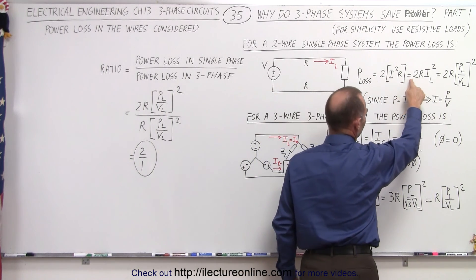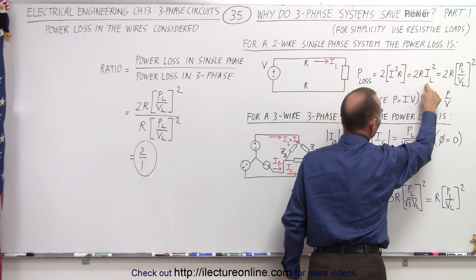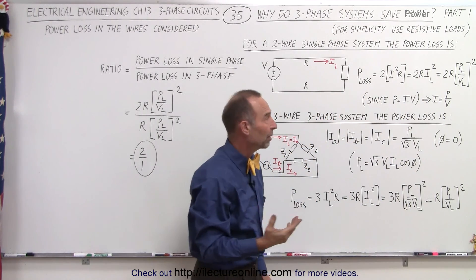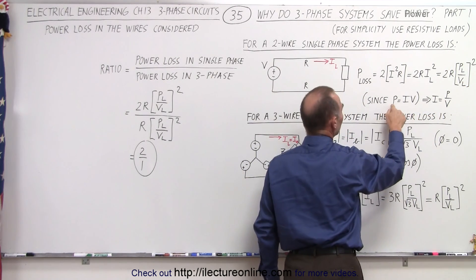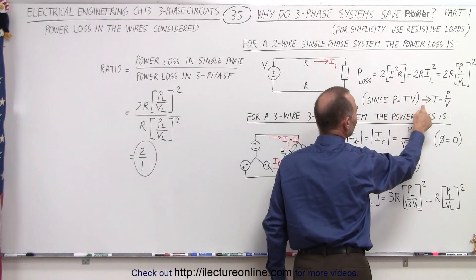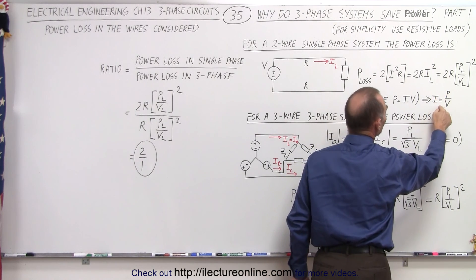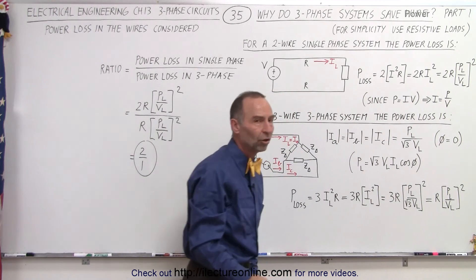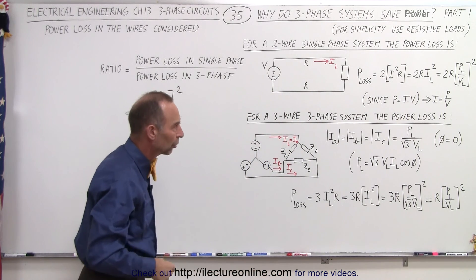Rearranging the terms, we have 2R times I of the line, the line current squared. And of course, the line current can be expressed in terms of the power and the voltage. Notice that the power is I times V, therefore, I is P over V. So instead of writing I, we could write P over V, and this is in relation to the line voltage and the line current.